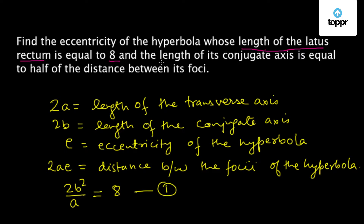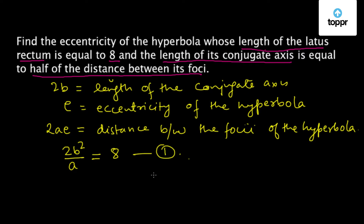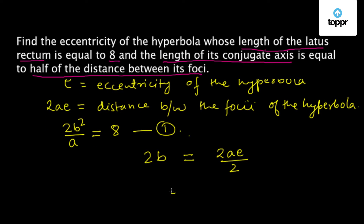The question also states that the length of the conjugate axis is equal to half of the distance between its foci. So we can write 2b equals half of 2ae, which gives 2b = ae. From here we get E = 2b/a. Let us call this equation number 2.